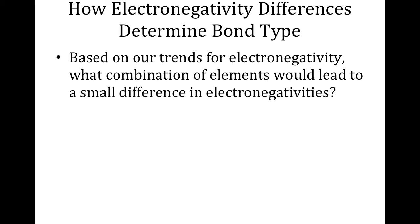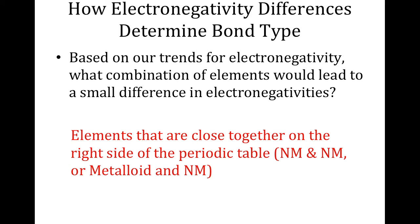Based on our electronegativity trends, elements that are close together on the right side of the periodic table lead to small differences in electronegativities. We don't say the left side because those metals form metallic bonds, and metals only bond with metals of the exact same element. So we look at non-metals and metalloids on the right side. A non-metal can bond with a non-metal, or a metalloid can bond with a non-metal. A metalloid will not bond with another metalloid.